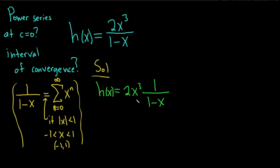And now we're going to apply this formula to this piece here. So this is equal to 2x cubed times, and now we're just going to replace this 1 over 1 minus x with the infinite sum. So this is the infinite sum as n runs from 0 to infinity of x to the n. Just like that. And this is true if the absolute value of x is less than 1.